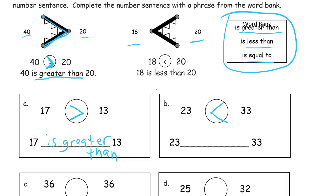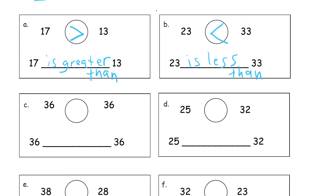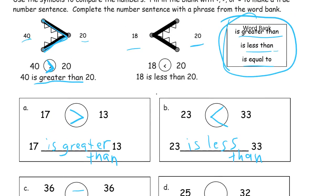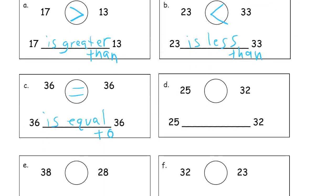Now here we have 36 and 36. They're equal, so we use the equal sign. So it's is equal to. Again, if you don't know how to spell equal or greater than, look up here in the word bank. That's how you can copy the word and see how to spell it correctly.